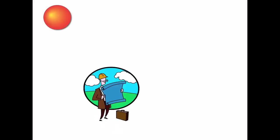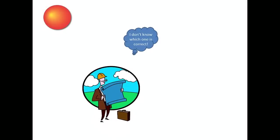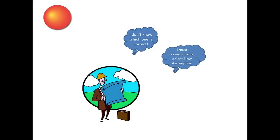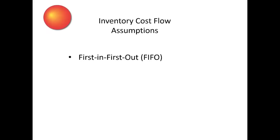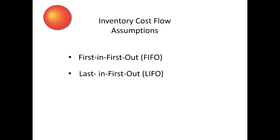So when management cannot specifically identify the unit cost of what was sold, it has to use a cost flow assumption to record the expense. It simply is the best management can do with the information available at the time. The three most common cost flow assumptions are first in, first out (FIFO); last in, first out (LIFO); and moving weighted average.